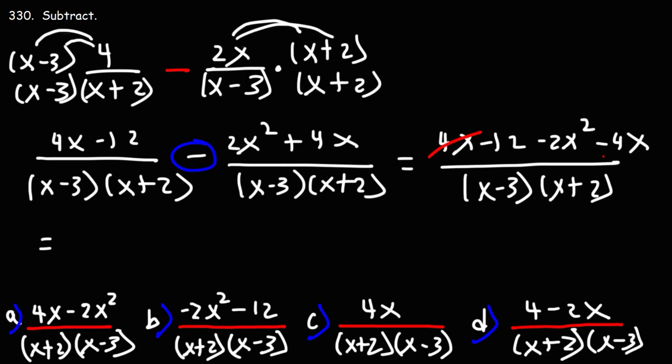4x and negative 4x will cancel. So we're left with negative 2x squared minus 12 over x minus 3 times x plus 2.